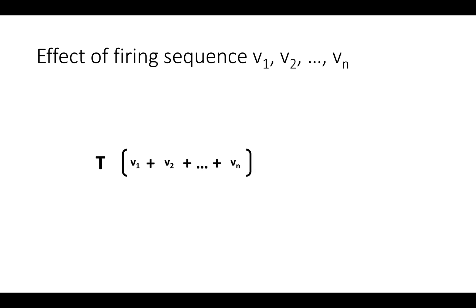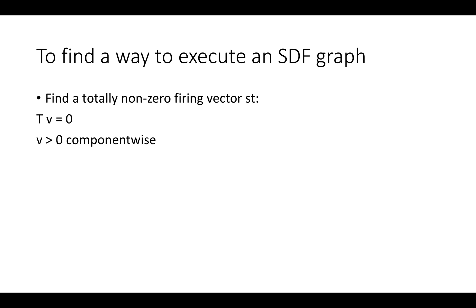Let's just abstract the topology matrix away and call it T. So the way to execute an SDF graph is to find a totally non-zero firing vector such that the topology matrix times the firing vector v is equal to 0 component-wise, and v is greater than 0 component-wise.